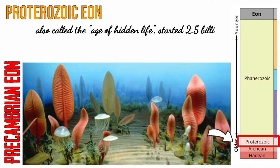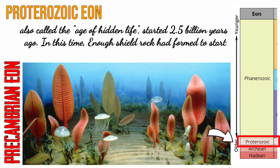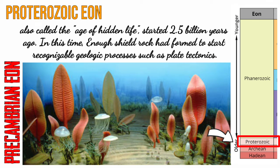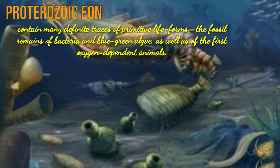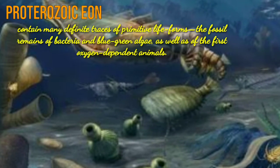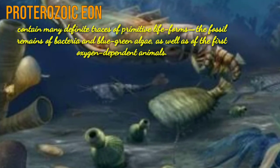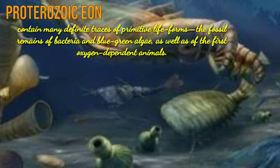The Proterozoic eon, also called the Age of Hidden Life, started 2.5 billion years ago. In this time, enough shield rock had formed to start recognizable geologic processes such as plate tectonics. The Proterozoic eon contained many definite traces of primitive life forms — the fossil remains of bacteria and blue-green algae, as well as the first oxygen-dependent animals.